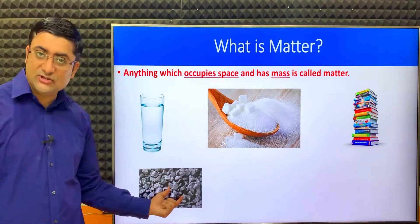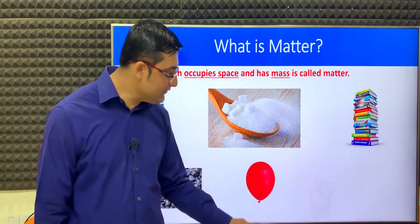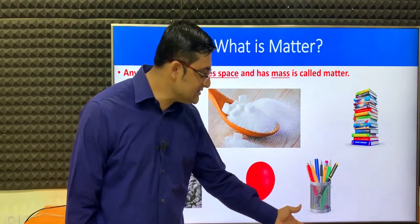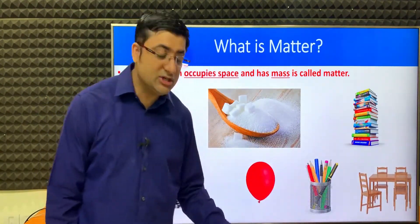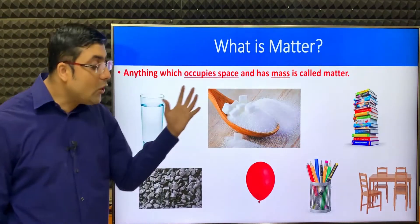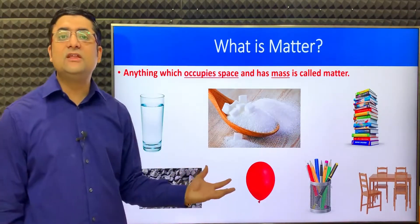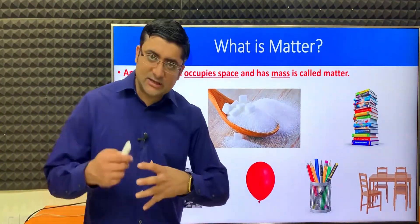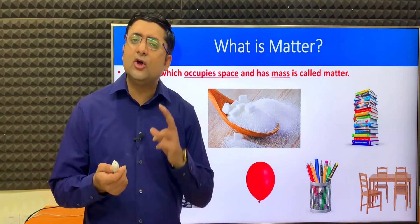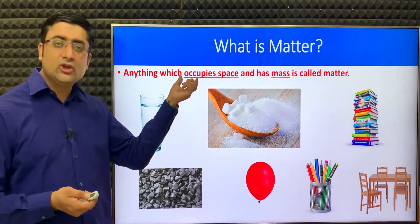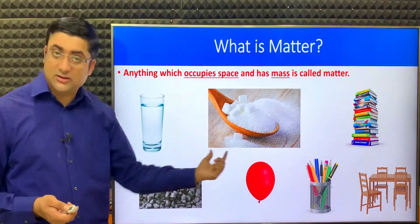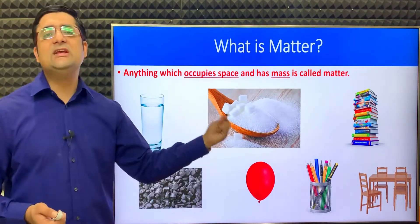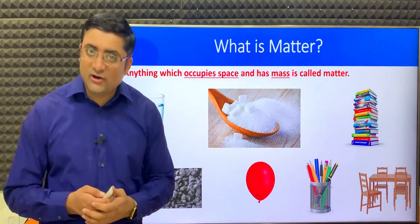Similarly, pieces of coal, a balloon, pens, a pen stand, and a table and chair — these are all examples of things which are matter. Whenever you want to tell whether something is matter or not, all you have to do is check: does it occupy space? They all do. Do they have mass? They all do. So these are examples of matter.